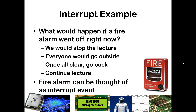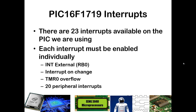Whenever a fire alarm goes off — and hopefully wherever you are it goes off infrequently — when it does, you want to be able to handle it right away. Within the PIC 16F1719, there are 23 interrupts available, meaning 23 different events that could cause an interrupt within the PIC microcontroller code. That is not to say you will need to use all 23. You can use no interrupts, just one, or any other combination. In the rest of this lecture, we will talk about specifically three of the interrupts available and briefly touch on the 20 other peripheral interrupts that exist.